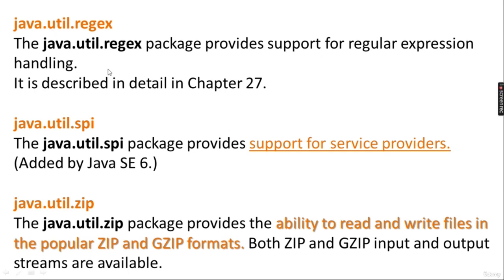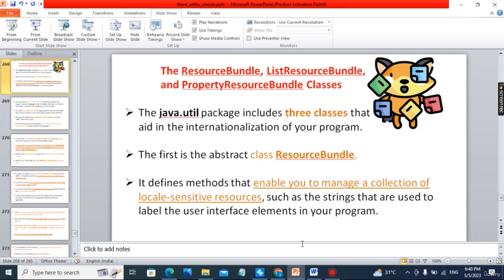The regex package provides support for regular expression handling, covered in chapter 27. The spi package provides support for service providers, added by Java 6. The zip package provides the ability to read and write files in ZIP and GZIP formats, with both input and output streams available. This completes the theory part for more utility classes. In the next session we will start with practical examples and try to finish them in one or two sessions. Thank you so much.